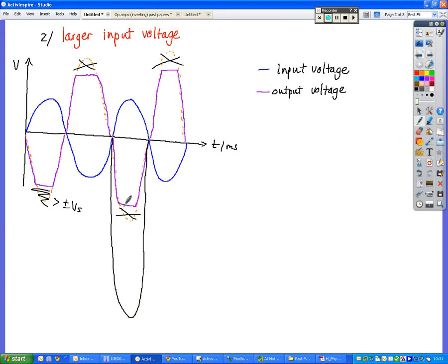So up to this point of saturation, it's just going to amplify the voltage as normal. But it can't go any higher than say that 85% of what the plus or minus Vs. So that's how we end up getting that square wave.